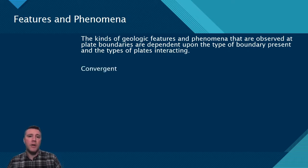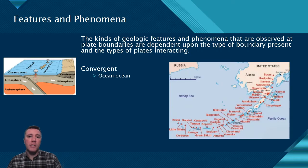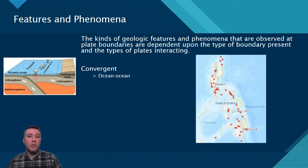At an ocean-ocean convergent boundary, because both plates have relatively equal density, when they collide into one another, both plates begin to fold under and dive toward the mantle. This results in features like volcanic island chains, such as seen in the Aleutian Islands in Alaska as well as the Philippine Islands, and deep ocean trenches like the Marianas Trench, which is about two and a half times as deep as Mount Rainier is tall.